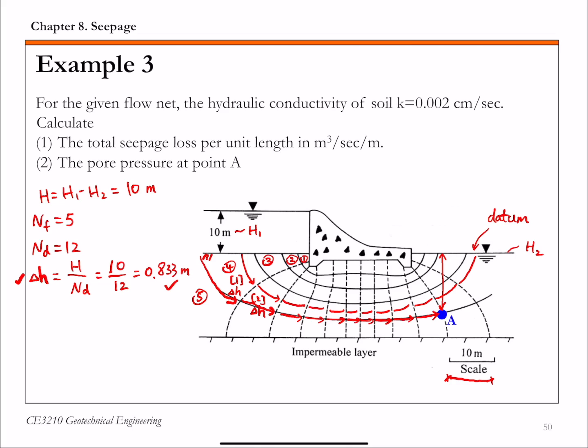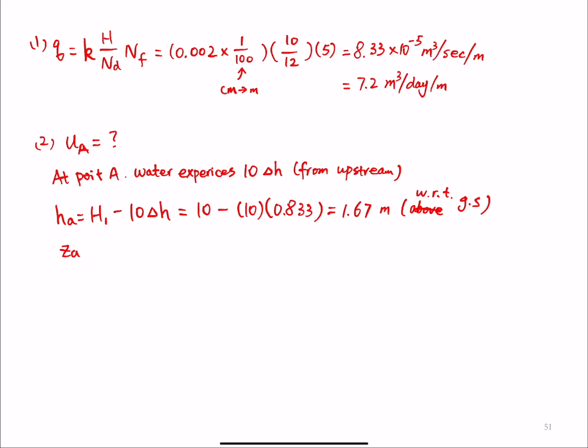Then you can read directly from the graph. So this length here, this is approximately 13 meters. And it's below the ground surface. So ZA is negative 13.